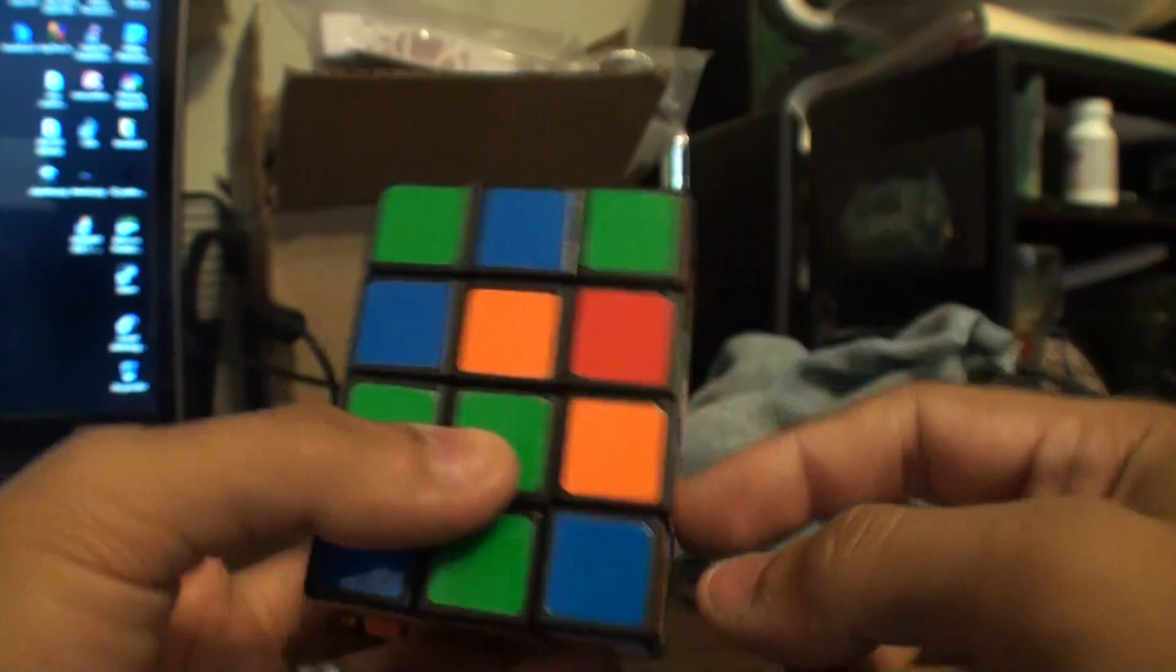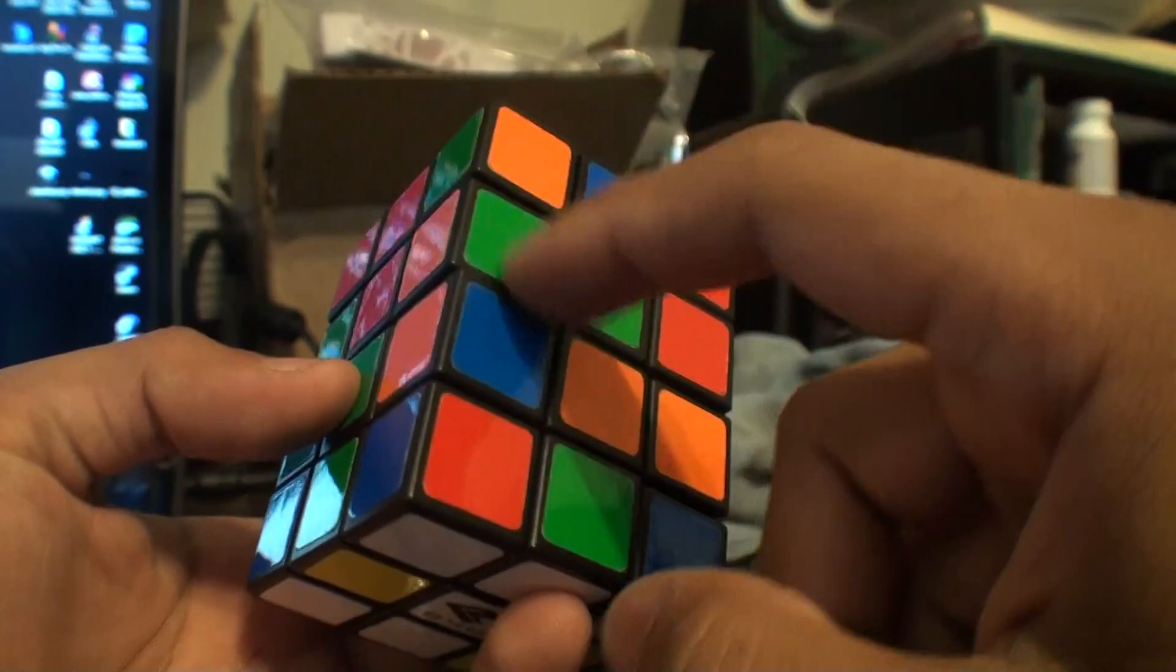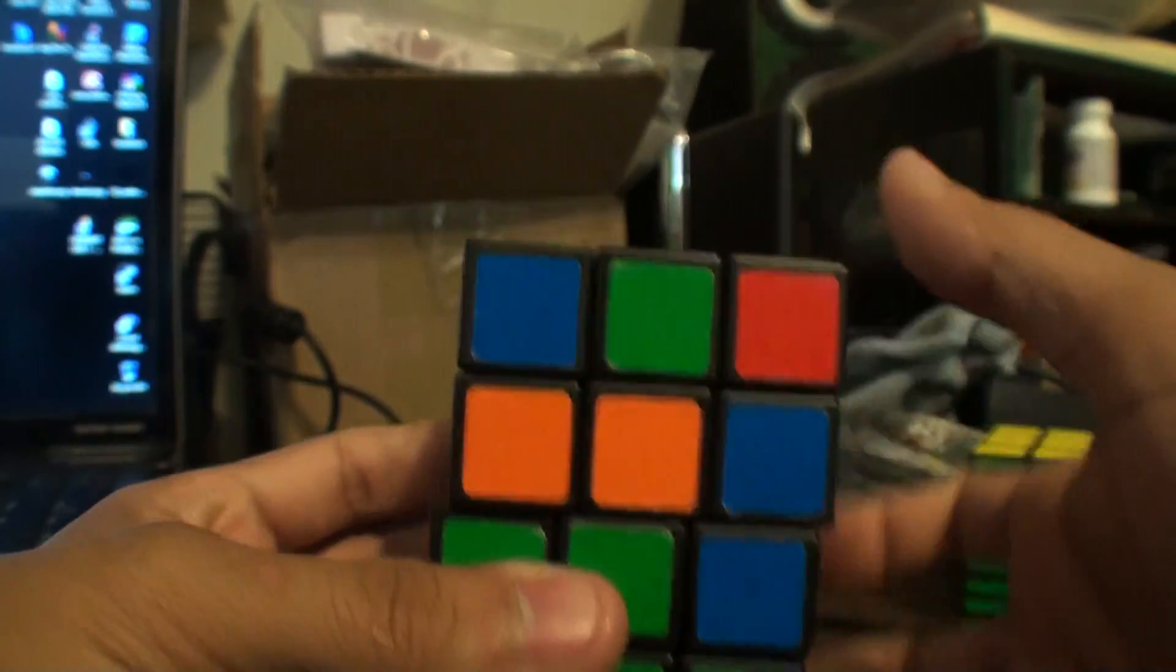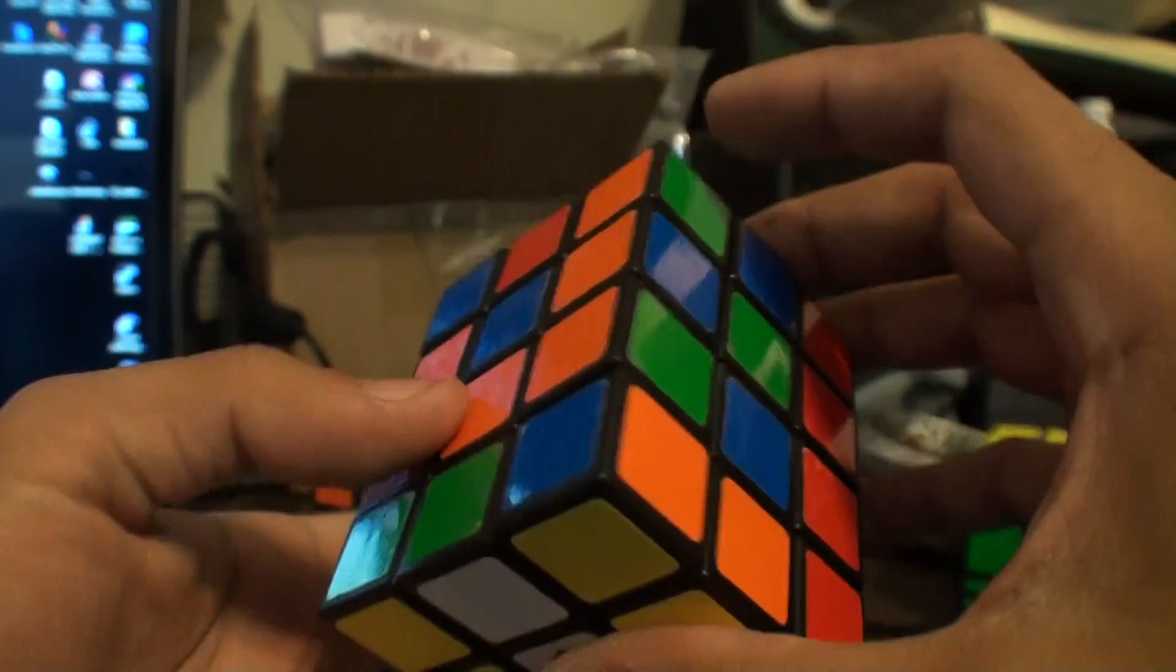So this one is green and orange. So I'd have to bring orange over here and green over here. And then R U R' U' R. That fills that bottom piece in.